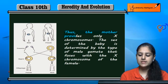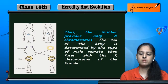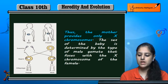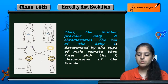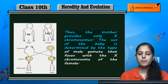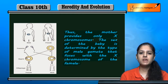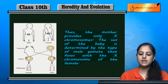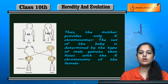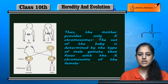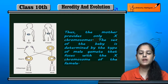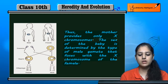The mother provides only X chromosomes. So the sex of the baby is determined by the type of male gamete that fuses with the X chromosome of the female. To determine the baby's sex, it depends on the type of chromosome coming from the male that combines with the female's X chromosome.